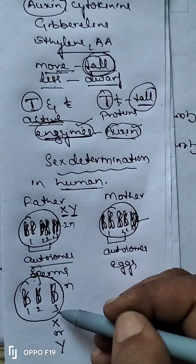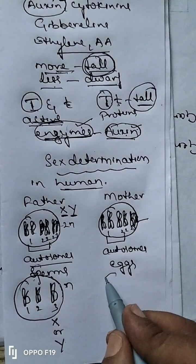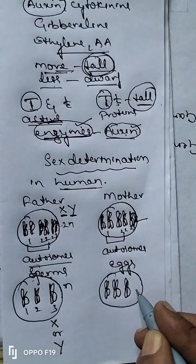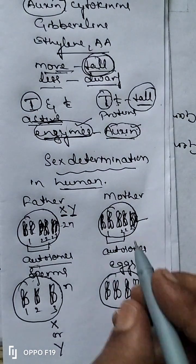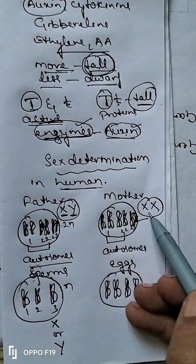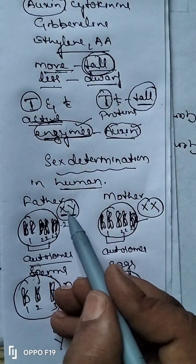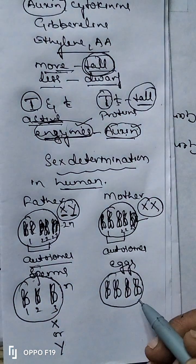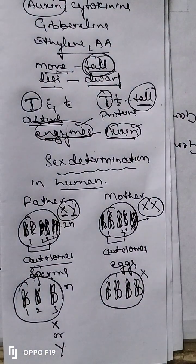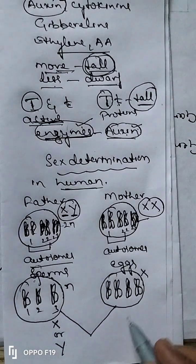So in the gamete, the 23rd chromosome may be X or Y. In mother also, during gamete formation, from the first set one chromosome, second set one chromosome, the 22nd set one chromosome, and from the 23rd pair one chromosome. In mother, the 23rd pair will always be XX only. These are homozygous because they contain the same alleles. The father contains different alleles in the 23rd pair — X and Y — so they are heterozygous. In mother, the 23rd chromosome will always be X only.